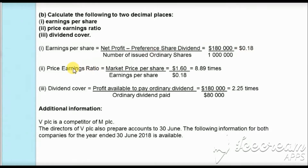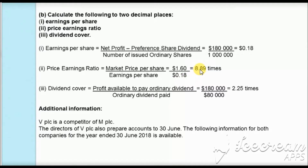Next, we have to calculate the price-earnings ratio, which equals market price per share divided by earnings per share. Market price per share was calculated in the first part as $1.60, divided by earnings per share of 18 cents, giving us a price-earnings ratio of 8.89 times.